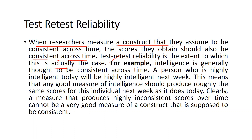For example, intelligence is generally thought to be consistent across time. Someone who is highly intelligent today will be highly intelligent next week also. This means any good measure of intelligence should produce roughly the same scores for an individual next week as it does today. A measure that produces highly inconsistent scores over time cannot be a very good measure of a construct that is supposed to be consistent. If we are not getting similar results over this time period, we can say there is no consistency.